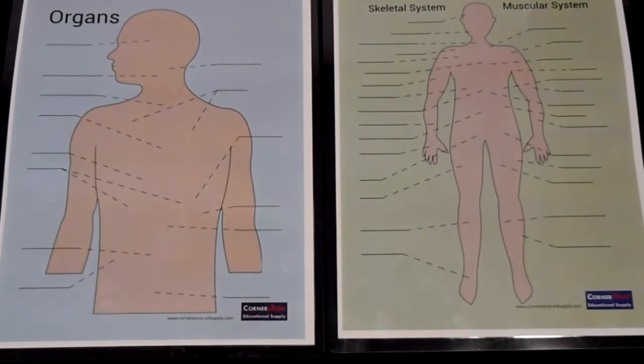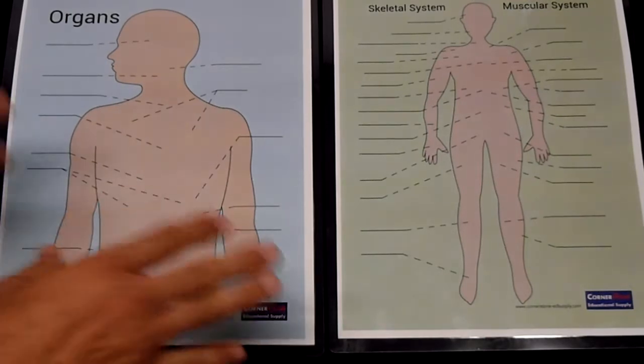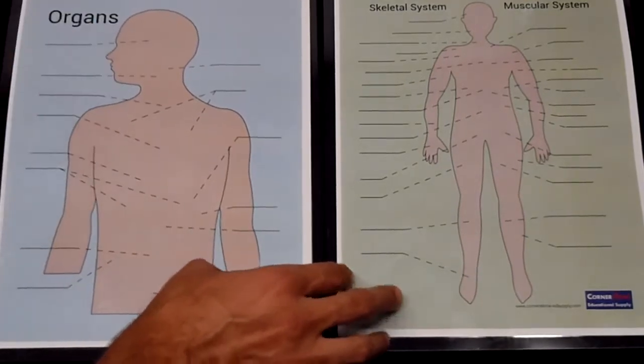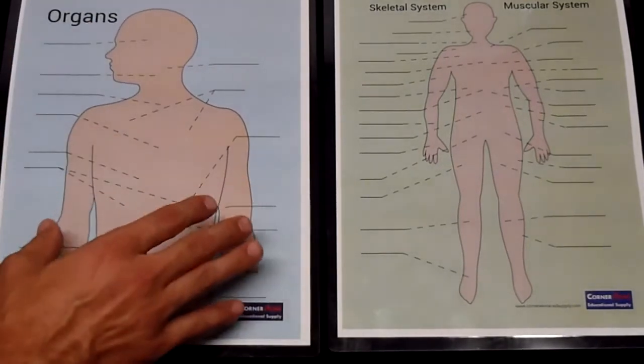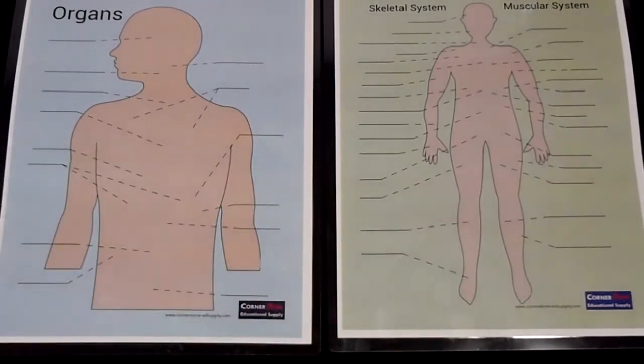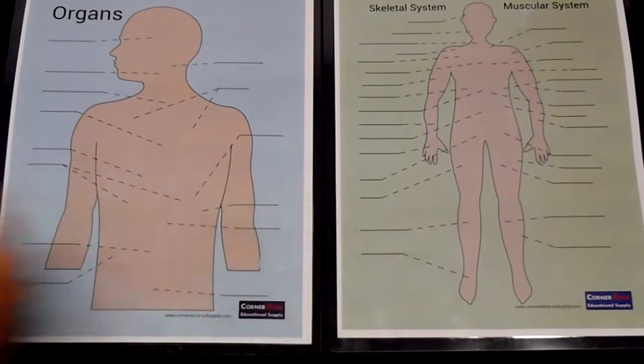This is a set of vinyl stickers, and your package comes first with two backer boards that are completely laminated, and one is for the organs of the human body, and the other one is for the skeletal system and the muscular system.